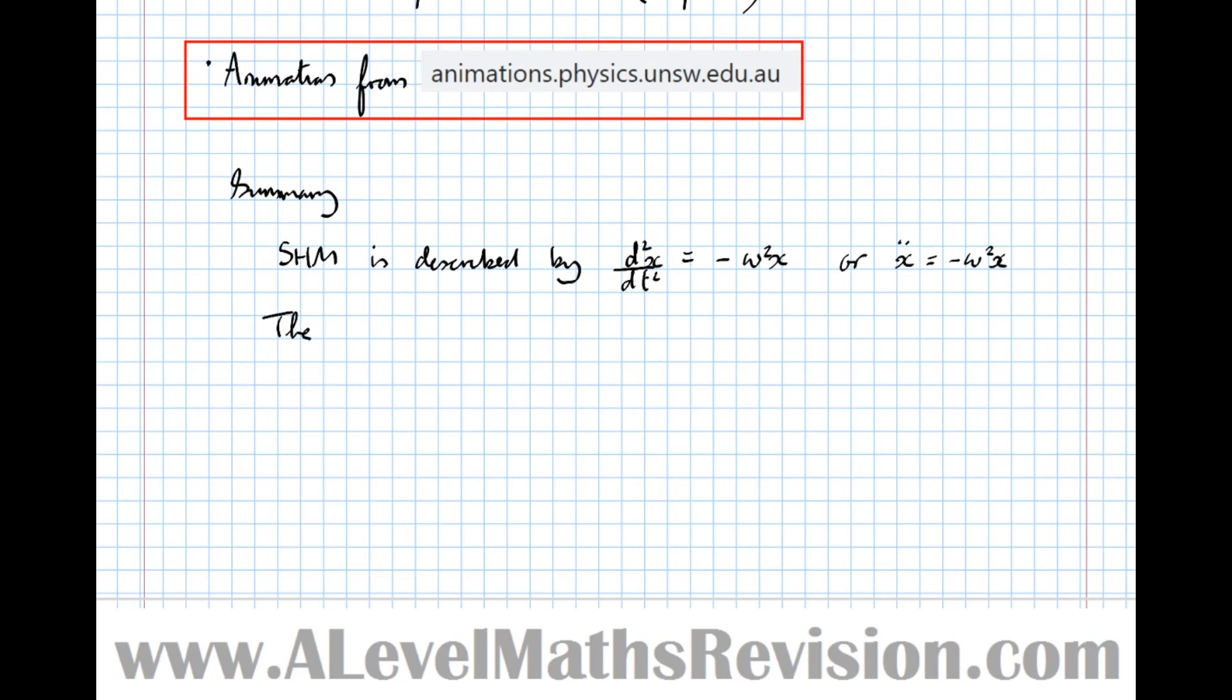The solution to this second order differential equation is x equals a sin(ωt) plus b cos(ωt), which can be rewritten as x equals r sin(ωt + α) using the compound angle formulae where α is yet to be determined as is r. So that's the basics of simple harmonic motion.